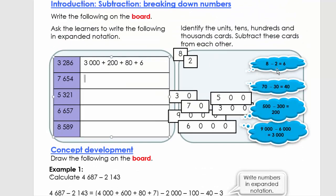What we're going to do today is we're first going to revise expanded notation. The first one we're going to look at is 3,286. So what we have is 3,000 plus 200 plus 80 plus 6. The next one is 7,000 plus 600 plus 50 plus 4. I want you now to do the next three orally. It's time to pause.